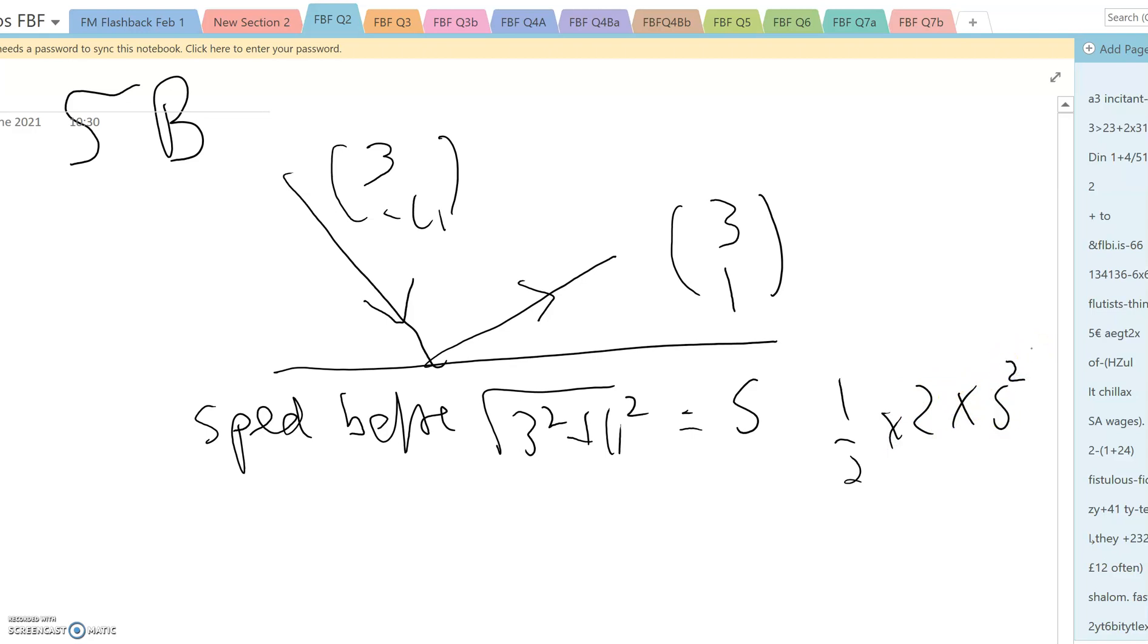Speed afterwards by the same process is root 10, so kinetic energy afterwards is a half times 2 times 10 which is 10, and that means 15 joules of kinetic energy is lost.